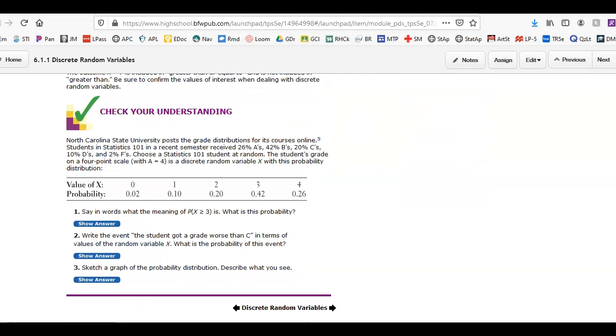So let's look at this check your understanding. So take a minute, pause the video. Alright, I'm gonna go over this question right now. Say in words what the meaning of this is. The probability X is greater than or equal to 3. Well, X represents the student's score, with an A being a 4. So this is the probability that a student scored a B or higher. And that probability would be the sum of these two, which is 0.68.